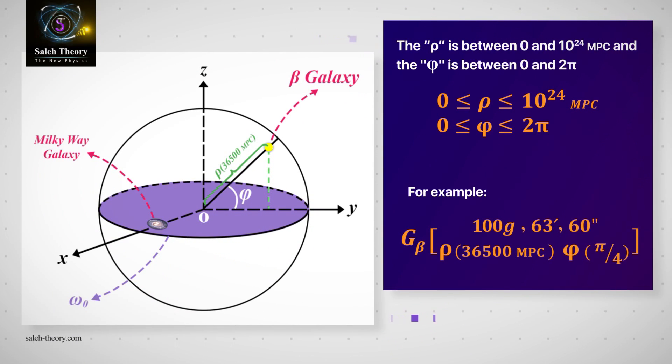The rho is between 0 and 10 to the power of 24 megaparsecs, and the phi is between 0 and 2π.